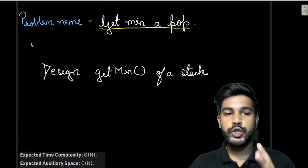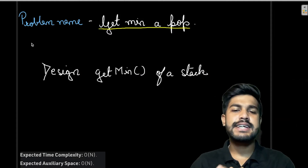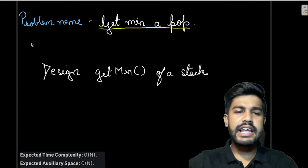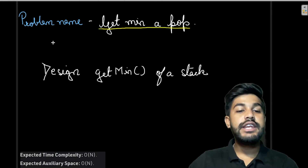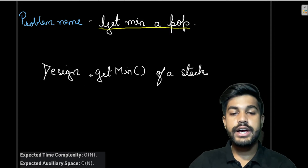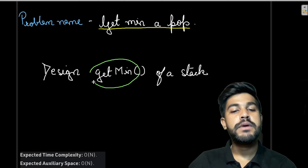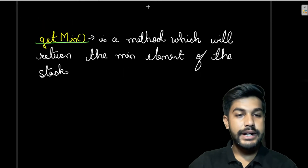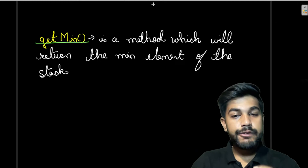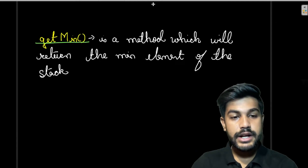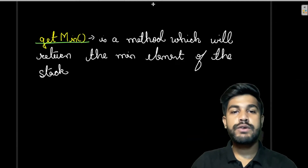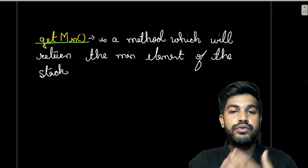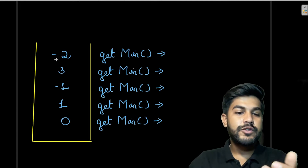Hi and welcome to GeeksforGeeks. Today we would be discussing the problem 'Get Min at Pop'. We need to design an algorithm which would help us get the minimum of a stack. The get_min method would return the minimum element from the stack, which holds the elements already present.